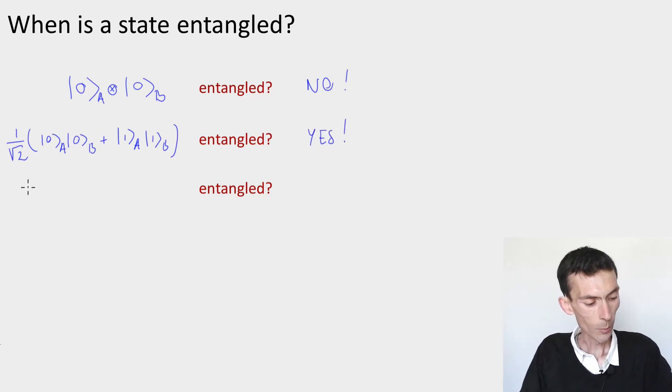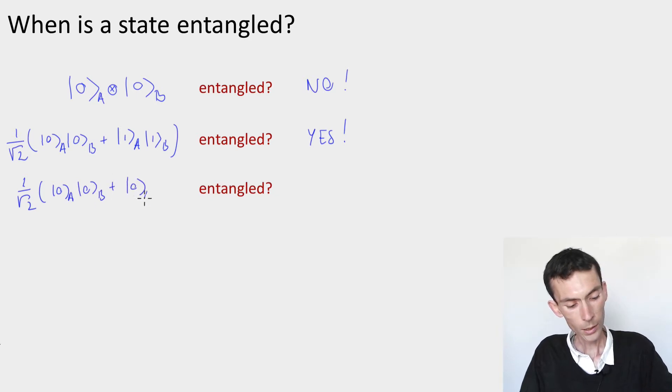Let's do a third example. 1 by root 2, 0 on A, 0 on B, plus 0 on A, 1 on B. Is this entangled or not?